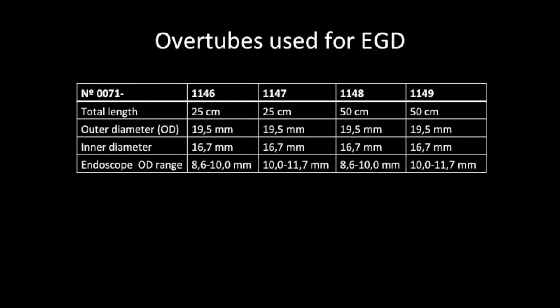Several tubes are available for use in therapeutic endoscopy. We used a gastric overtube — Guardus overtube, esophageal — with an inner diameter of 16.7 mm, outer diameter of 19.5 mm, and 50 cm in length, from US Endoscopy, Ohio, USA.